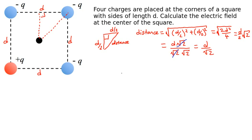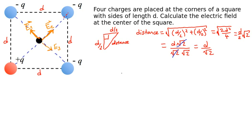To calculate the electric field at the center of the square, we first mark the electric field directions. Due to the upper left charge, the electric field points in one direction — we mark this as E1. Due to the upper right charge, the electric field points in another direction — we mark that as E2. Due to the lower right charge, the electric field at the center is E3. Due to the lower left charge, which is positive, the direction is outward — we mark that as E4.